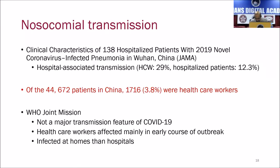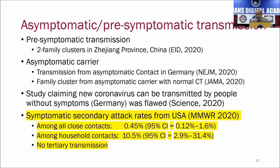There is huge misinformation on social media that asymptomatic and pre-symptomatic people transmit infection. China did not find any such evidence. A report published in Germany in Science in 2020 was withdrawn because the data collection and analysis was flawed. What we know definitively is that the level of transmission in household contacts can be up to 11%. For those who are not family members and are close contacts, it is as low as 0.5%, and in China they did not find tertiary transmission.